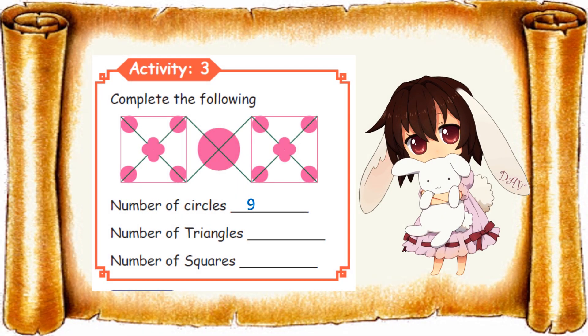We'll find the number of triangles. Let's start, join with me: 1, 2, 3, then left side 4. The same on this side: 6, 7, 8, and 9. Then 10, 11. Now join 2 triangles and add: 11, 12, 13, 14, 15, 16, 17, and 18.